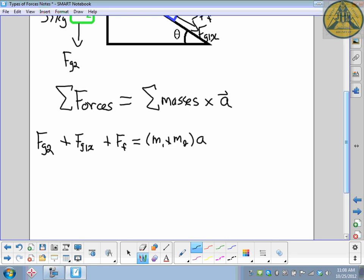That has to equal the two masses added together times the acceleration. So you're given enough information so that when you plug in all of your numbers, the only thing you will not know is M1. FG2, FG1X, and FF all break down into separate calculations, separate little formulas, and so we'll write those down here.